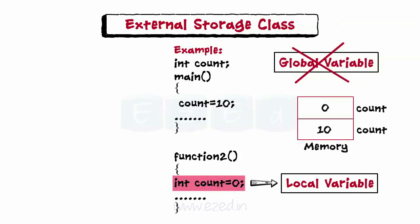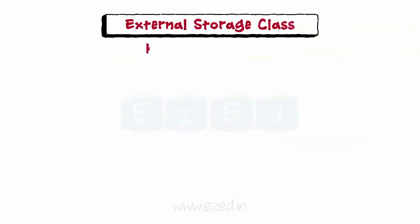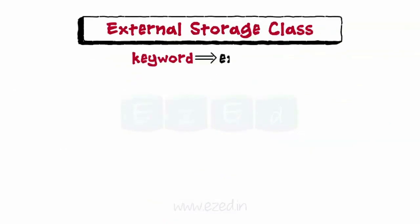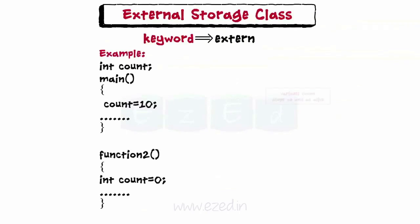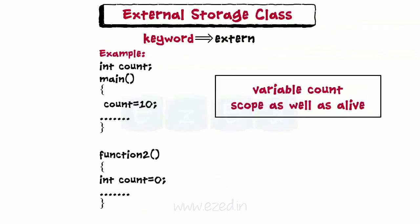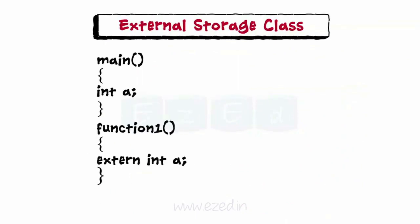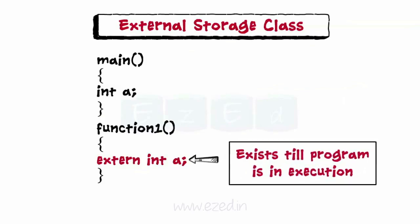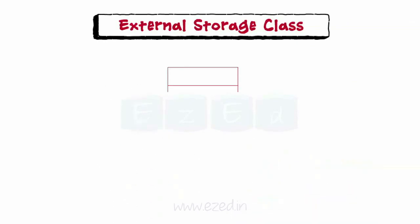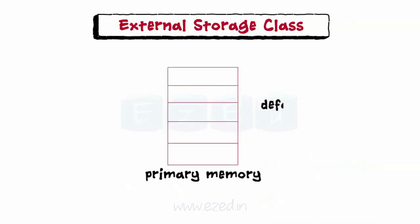The scope of the count variable in function2 is within the function2 block only. The keyword used for declaring a global variable is extern. Their scope and life is throughout the entire program. They are declared like any other variable in one of the program modules, preceded by the extern keyword. These variables remain in existence as long as the program is in execution — they are alive throughout. They are stored in primary memory and their default value is zero.